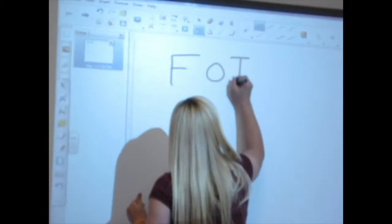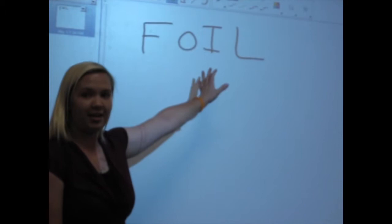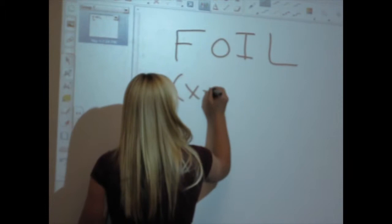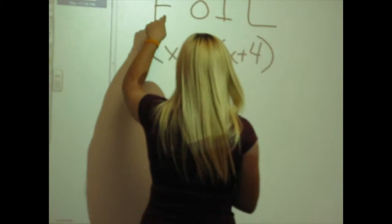The FOIL method. For FOIL, the F stands for first, O for outside, I for inside, and L for last. So we go back to that equation that I just put out there.